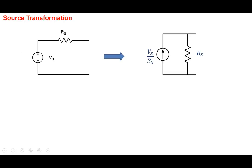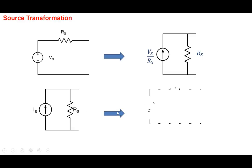Coming back to maximum power transfer: given any complicated linear circuit with a load resistor RL, the problem is simple. Replace the linear circuit between those terminals with its Thevenin equivalent — we know how to find VTH and RTH. For maximum power transfer, choose RL = RTH. Thevenin's equivalent allows us to reuse a very simple result in much more complicated cases.